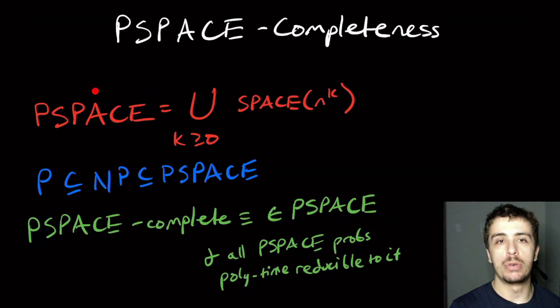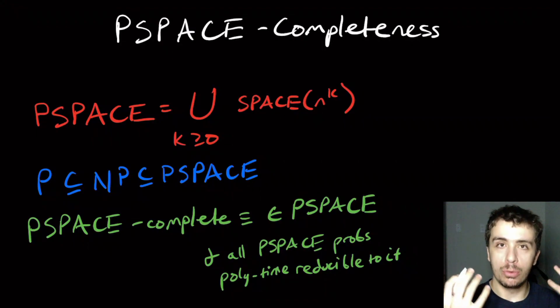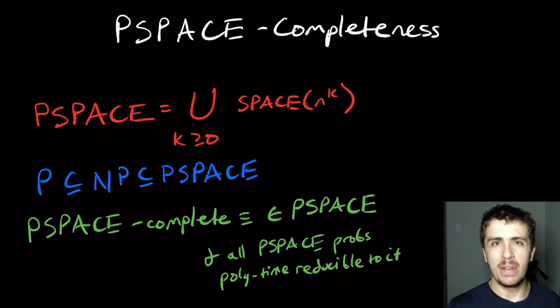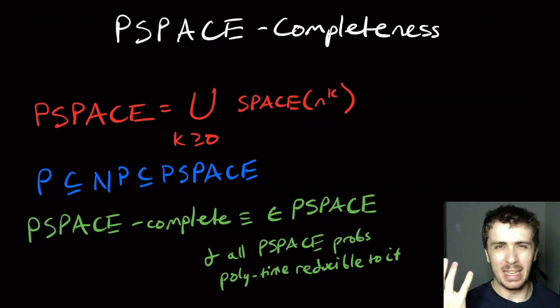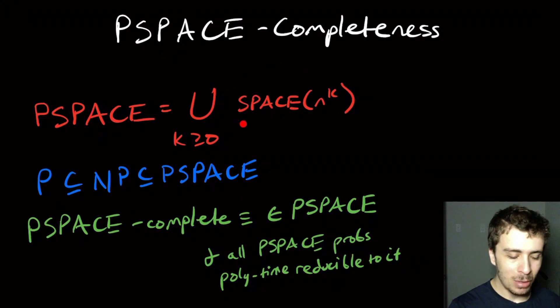This is capturing polynomial space. Why would you want to study this class? Because we want to think about what kinds of problems we can solve with only a very small amount of space. This is not really probably the best definition because we think of n squared as being inefficient, like bubble sort.